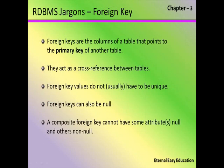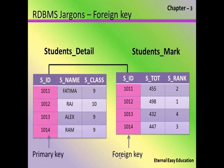Foreign keys are the columns of a table that point to the primary key of another table. They act as the cross-reference between tables. Foreign key values do not have to be unique. Foreign keys can also be null. Composite foreign keys cannot have some attributes null and others not null.